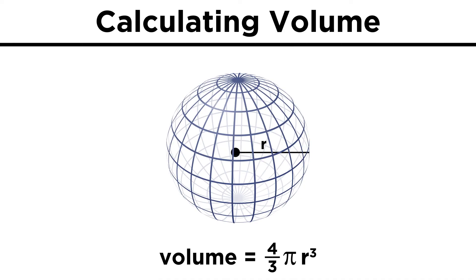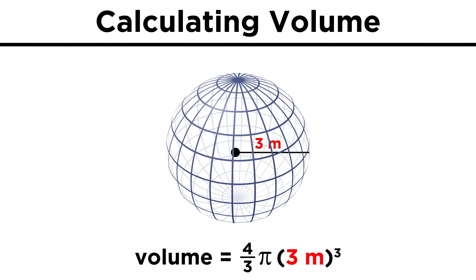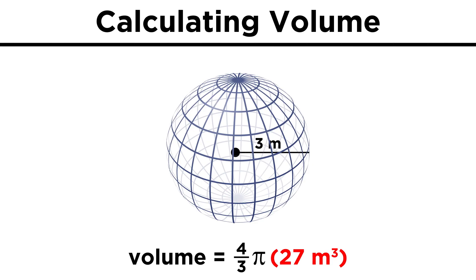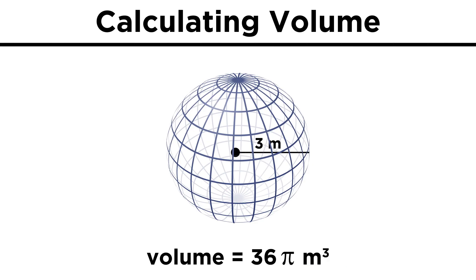Lastly, we need to be able to calculate the volume of a sphere. The formula for this is four-thirds pi r cubed. So with a radius of three, we cube it to get twenty-seven, divide by three to get nine, and multiply by four to get thirty-six, times pi is thirty-six pi cubic meters.